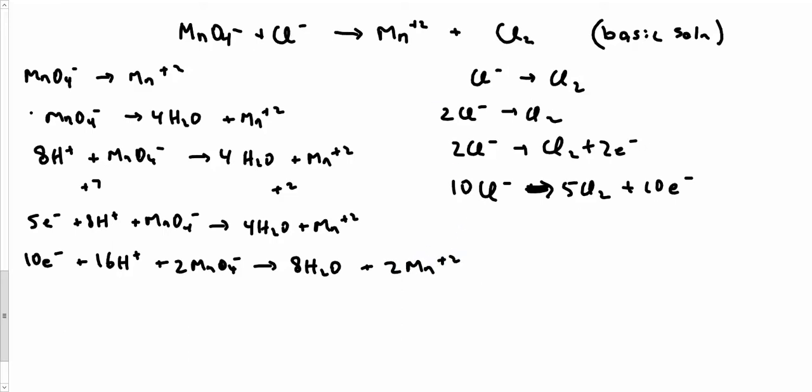Now before I add them, I'm going to do some cancellation. Definitely on the left I'm going to have 10, on the right I'm going to have 10. No waters, no H pluses or the other things that they might have in common. Now I can just write down 16H plus, 2MnO4 minus, 10Cl minus, arrow. Those are all three things on the left.